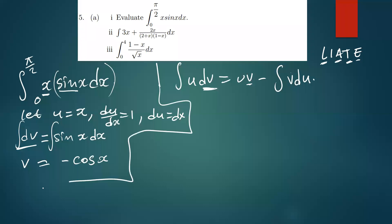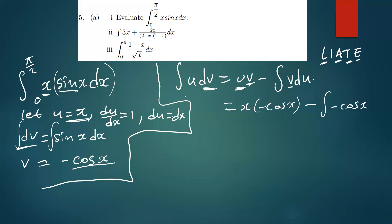Now we substitute everything into the integration by parts formula. We have u equals x and v equals negative cos(x). So we write x times negative cos(x), minus the integral of negative cos(x) dx. Simplifying, this gives negative x·cos(x), and the two negatives cancel to give a positive, plus the integral of cos(x) dx.